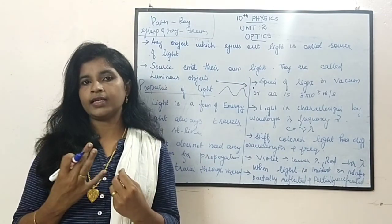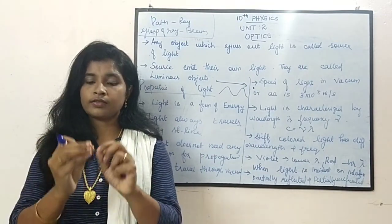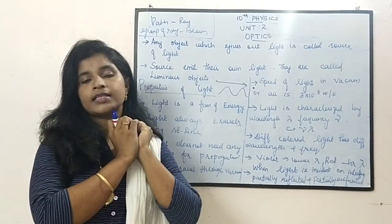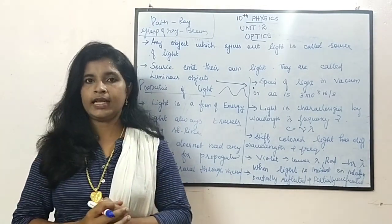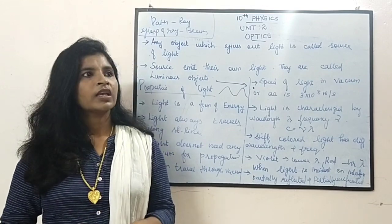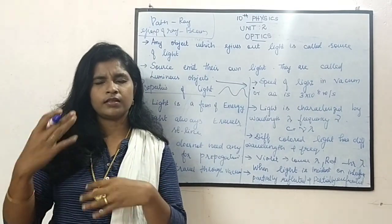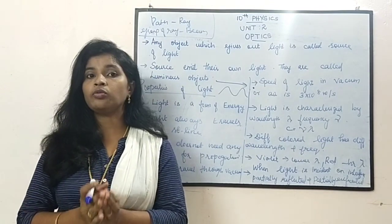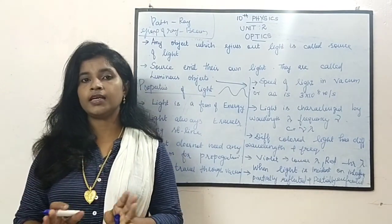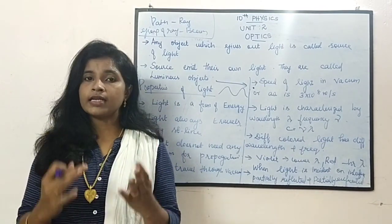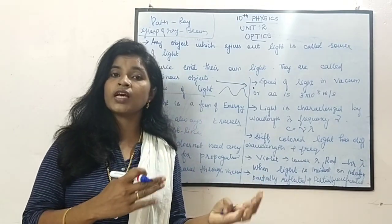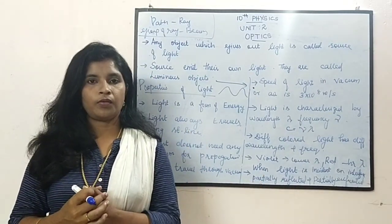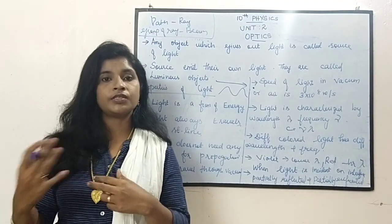It can be proposed that light is having a particle nature. Then they were analyzing, they were researching and they finally found out the latest theory: they said that light is having the wave nature as well as the particle nature. Based upon the situations, it will act as a particle or it will act as a wave.